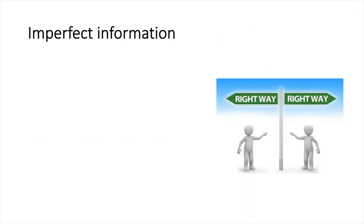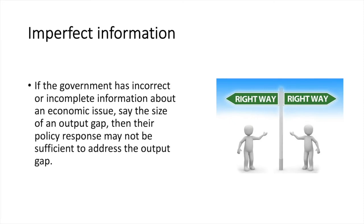If there are information gaps, then there is likely to be imperfect information. If the government has incorrect or incomplete information about an economic issue — say the size of an output gap — then their policy response may not be sufficient to address that very output gap. Even if they can correctly estimate the size of the output gap, the government would still need to know an accurate figure for the multiplier to ensure that they do not trade one problem for another.